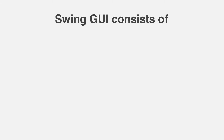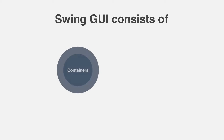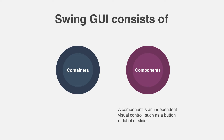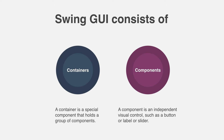A Swing GUI consists of two key items: containers and components. However, this distinction is mostly conceptual, because all containers are also components. The difference between the two is found in their intended purpose. A component is an independent visual control such as a push button, label, or slider. A container holds a group of components, making it a special type of component designed to hold other components.